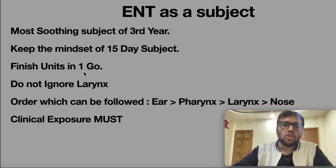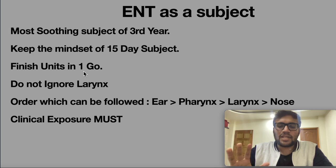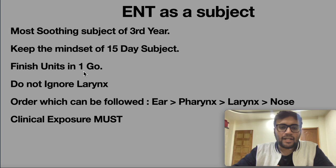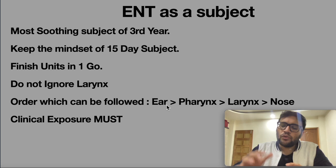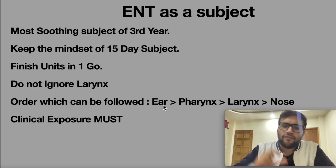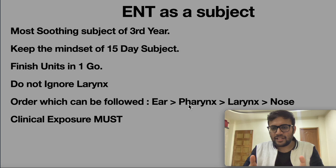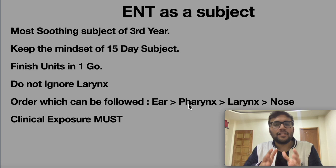Do not ignore larynx. Larynx is the last unit in ENT in any book, and what happens is that by the time you reach it, you skip it thinking 'I'll study larynx later.' Keep this in mind — don't ignore it. If needed, follow this study order: first study ear, then pharynx, then larynx, then nose. Ear is the heaviest topic in ENT but manageable. Pharynx is very light. Study ear and pharynx together for balance, then larynx and nose together.